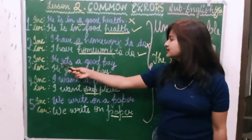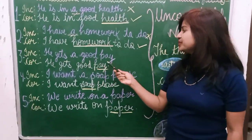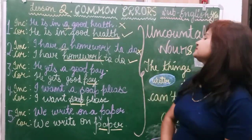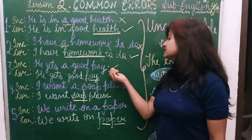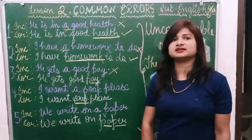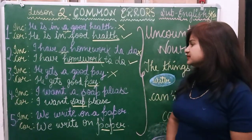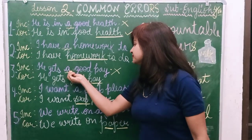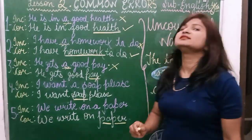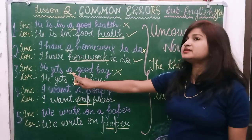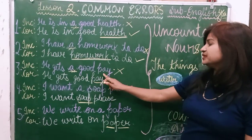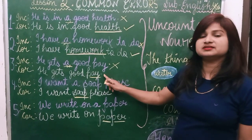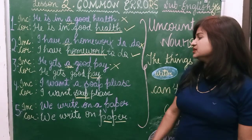Incorrect: 'He gets a good pay.' This is also a wrong or incorrect sentence. Before the word 'Pay' there is an article, but we do not need any type of article before the word Pay. Pay is an Uncountable Noun — Pay means money, and money is also an Uncountable Noun.